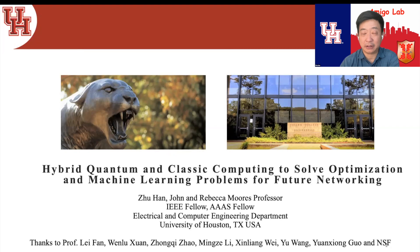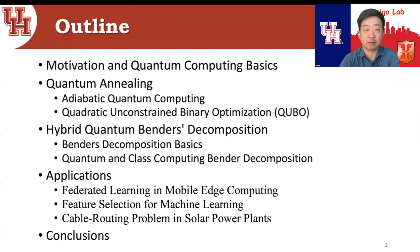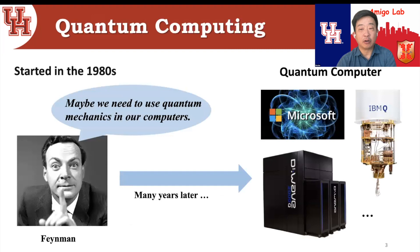Here is the outline. First we talk about the motivation and quantum computing basics, then we concentrate on quantum annealing. We discuss the mathematical model and the algorithm behind it, and then propose a hybrid quantum Benders decomposition to utilize the advantages of both quantum computing and classical CPU computing. Finally, we give applications for machine learning, wireless networks, and smart grid.